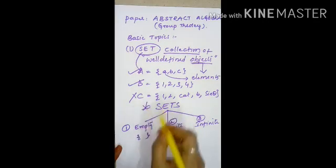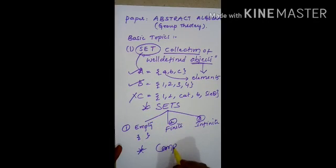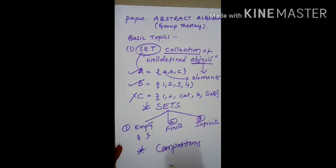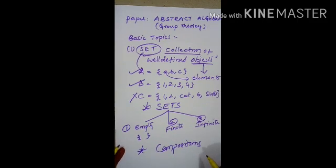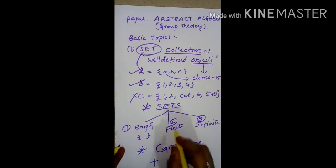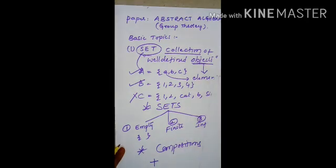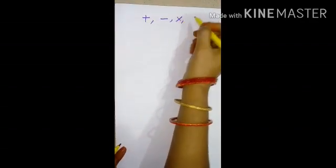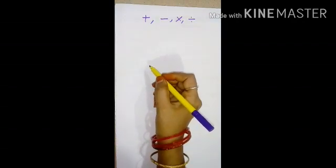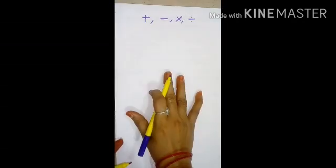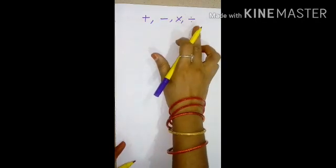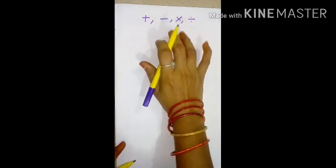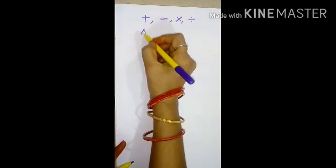Next, we will learn compositions on sets. Addition, subtraction, multiplication, and division are compositions on numbers. What about compositions on sets?